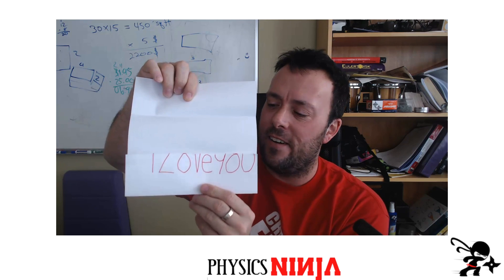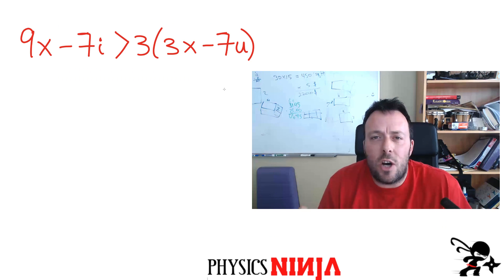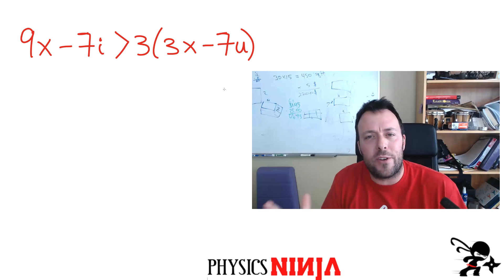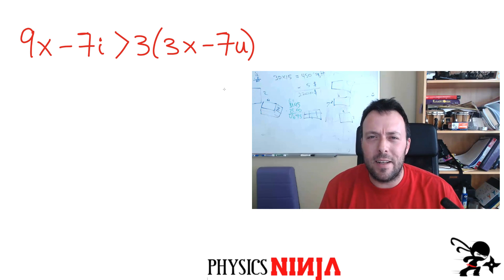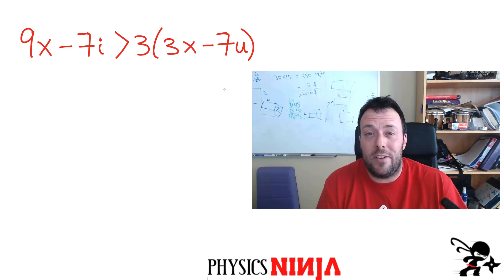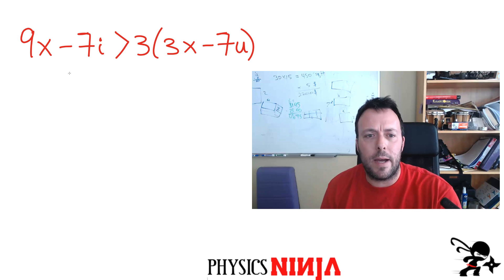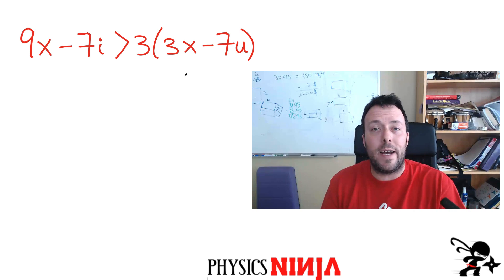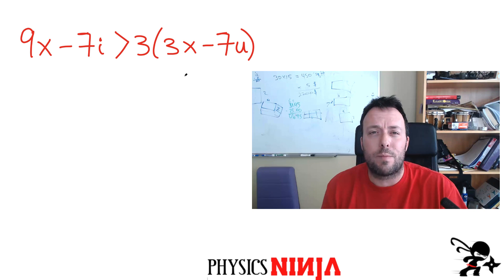The second method involves solving an algebraic problem. This is at the grade 7 level, so hopefully your loved one is able to solve it. It's not unique by any stretch, but here's one in particular that you can ask them to solve, to reveal the secret message. The problem is 9x minus 7i is greater than 3, parentheses, 3x minus 7u. Now they have to perform the algebraic steps in order to solve this problem. Let's go ahead and work our way through it.